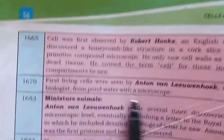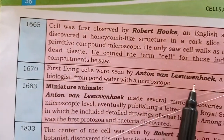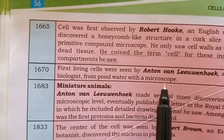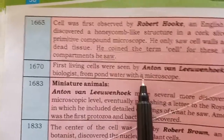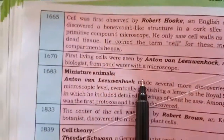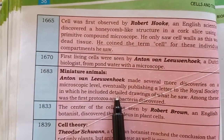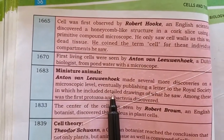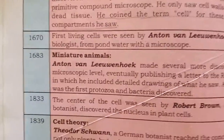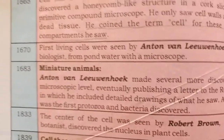In 1670, Leeuwenhoek, a Dutch scientist, placed a drop of water under the microscope and observed it. In 1683, Leeuwenhoek published his findings and reported protozoa — small unicellular animals found in water.